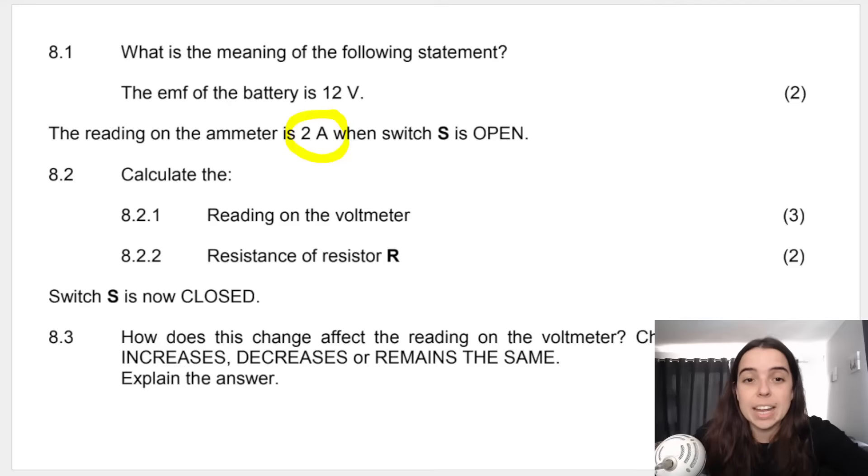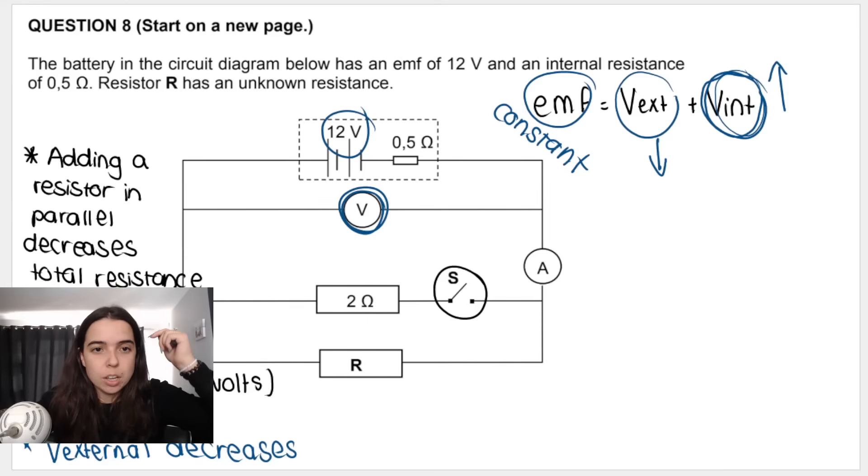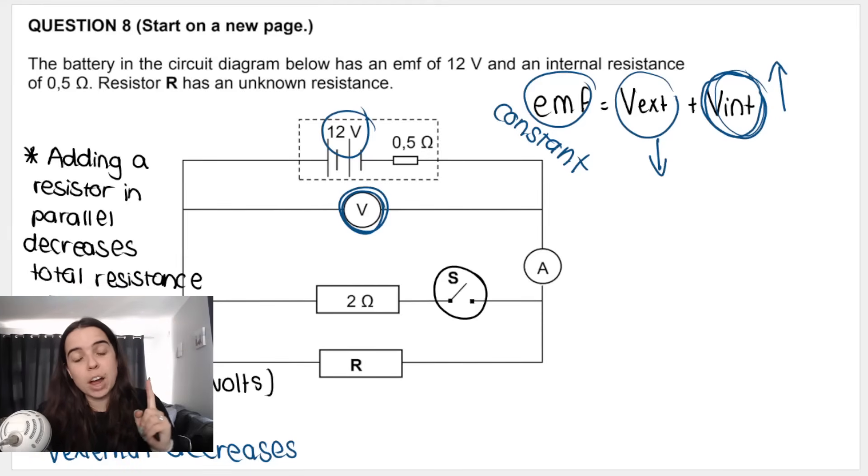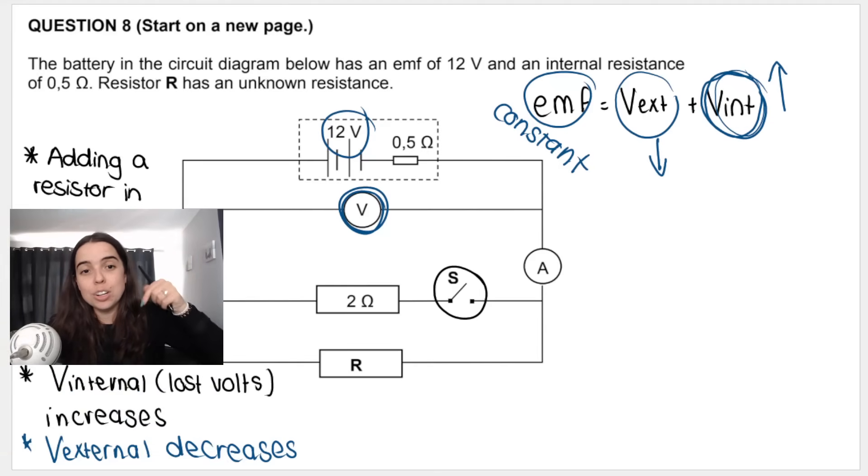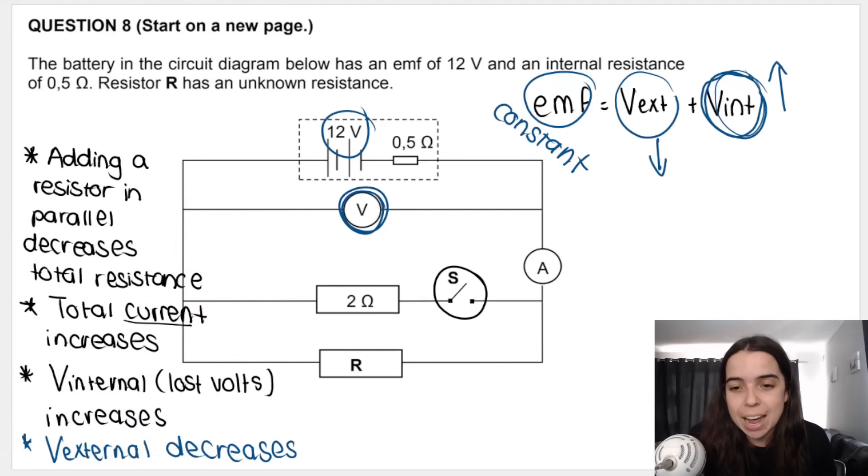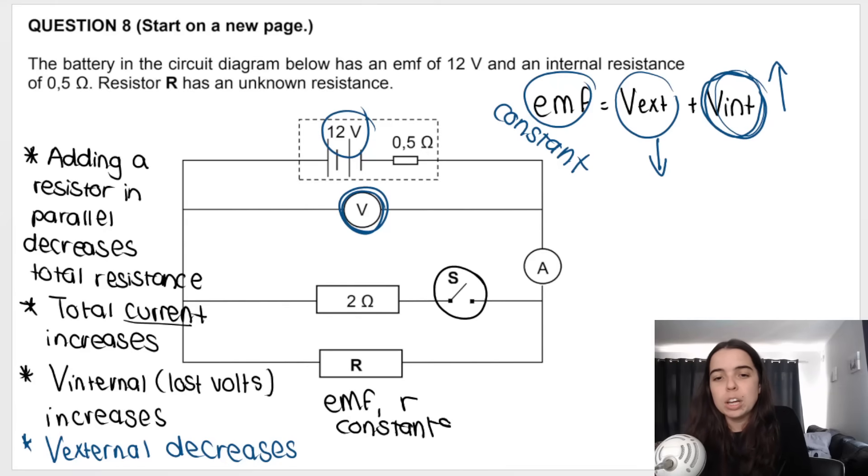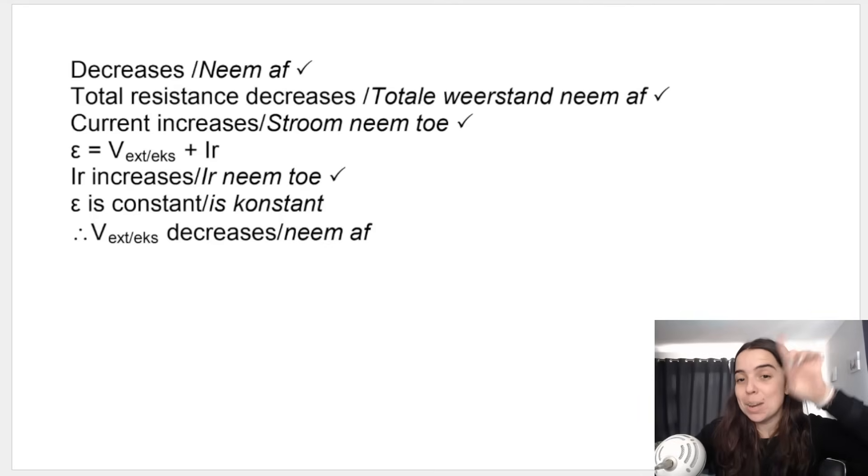It said, how does this change the reading on the voltmeter? The voltmeter reads V external. So recap, total resistance decreases, total current increases, whatever current does, V internal does the same. So V internal increases, V external decreases. And then what you actually should add in to your answer is the fact that two things are going to stay constant. EMF and internal resistance are constant. Remember, relationships only work if the other variables are constant. So ultimately your answer is decreases and this is your reason. And this is where you get marks for this question.